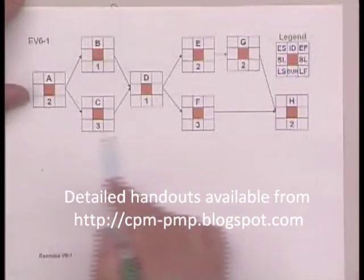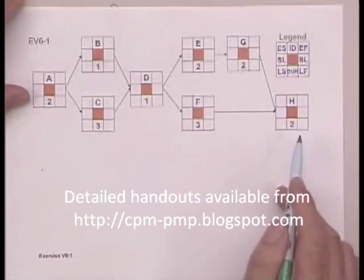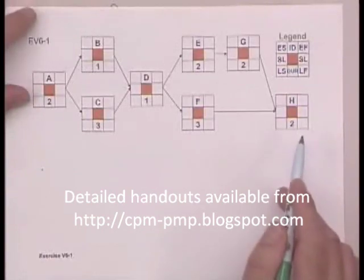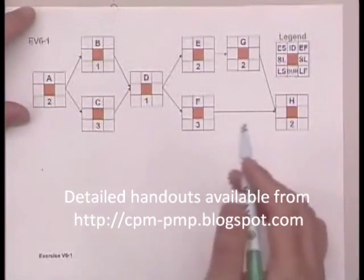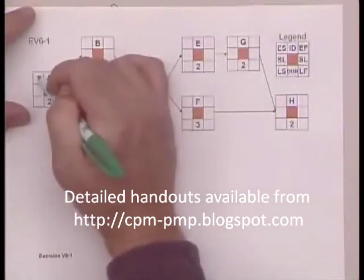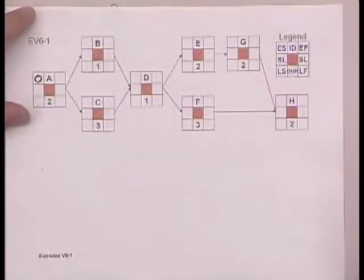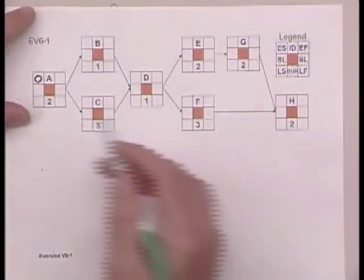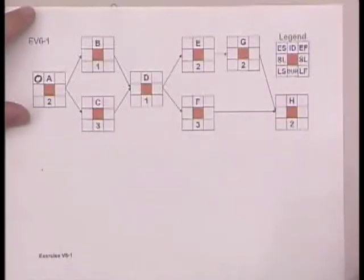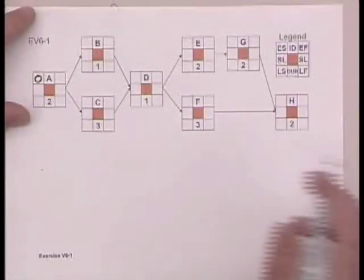So here we've got a network with eight activities, and we begin with the first activity, and the early start is zero. Now, I don't want to argue about how can a start time be zero. This is just how we work the problems. We always start with zero as the earliest start for the first activity.